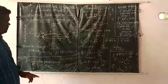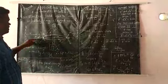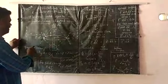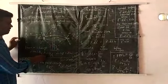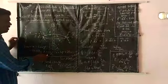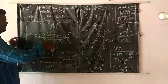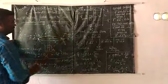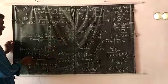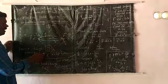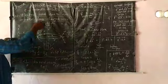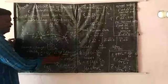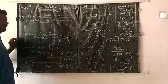The electric field is constant on the Gaussian surface. The charge is distributed on the linear wire, and the linear charge density is denoted by lambda. Lambda is equal to total charge per unit length. The length of the wire is capital L, so linear charge density lambda equals Q divided by L. The total charge distributed on the length of the wire is Q equal to lambda times L.